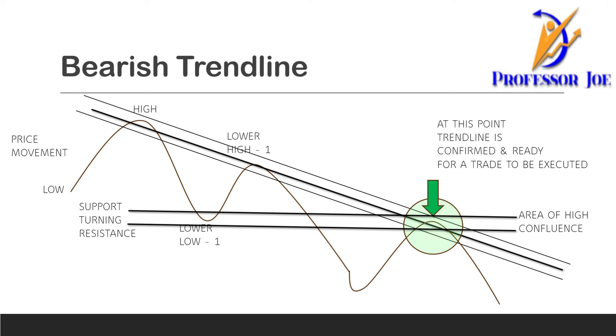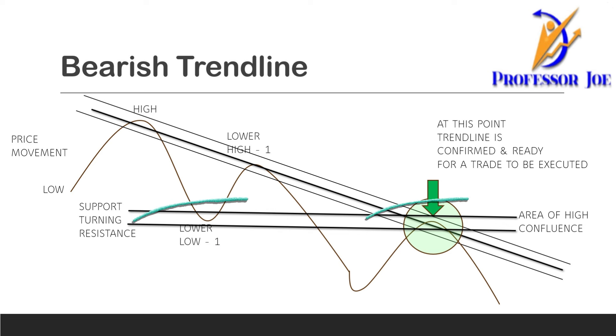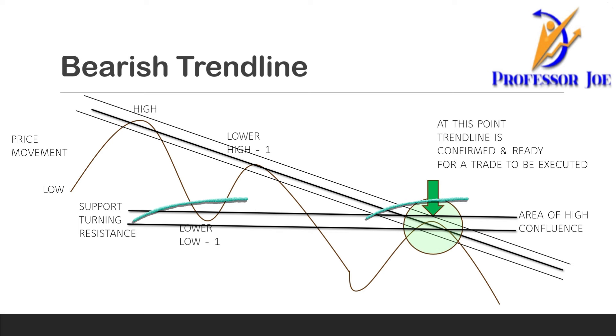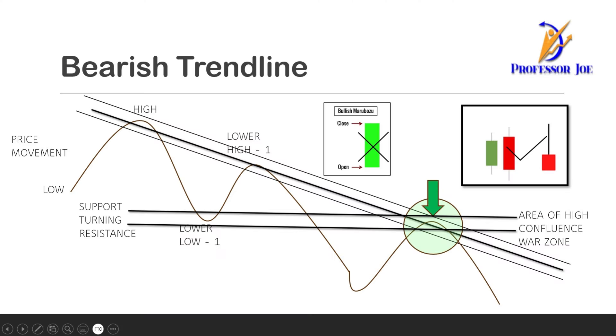Lower low number one was a support area, and if you draw a horizontal line you can see it has also become a resistance area at the lower high point number two. That means this area is an area of confluence — this is the area where the war between the bulls and the bears is going to happen. Once you know this is the area of confluence where the trend line and the support-and-resistance line are both meeting, you have to look for trader psychology — who is winning? Are the bulls stronger or are the bears stronger? Go in depth and check the candlestick pattern at this confluence area.